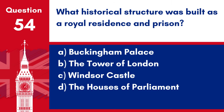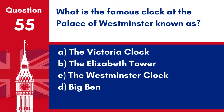Question 54. What historical structure was built as a royal residence and prison? a. Buckingham Palace. b. The Tower of London. c. Windsor Castle. d. The Houses of Parliament. Answer: b. The Tower of London. The Tower of London has served variously as a royal palace, a prison, an armoury, and a treasury.